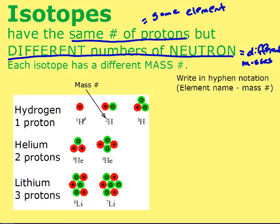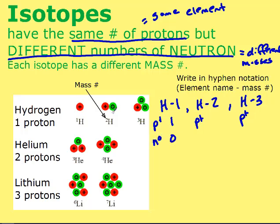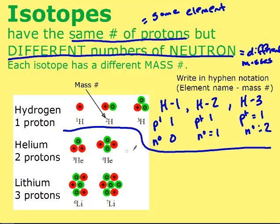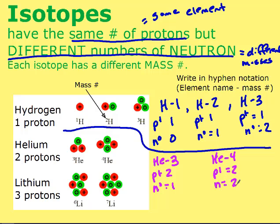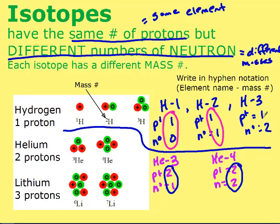For example, hydrogen-1 has one proton and zero neutrons; hydrogen-2 has one proton and one neutron; hydrogen-3 has one proton and two neutrons. For helium: helium-3 has two protons and one neutron, and helium-4 has two protons and two neutrons. Adding protons and neutrons gives the mass number. Notice that the protons stay the same — it's the neutrons that are changing.